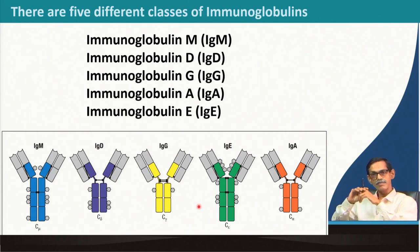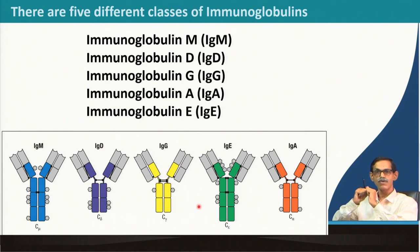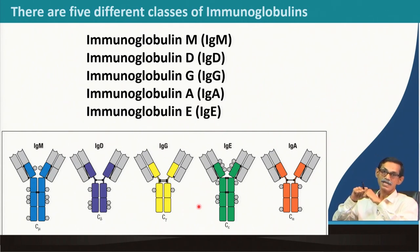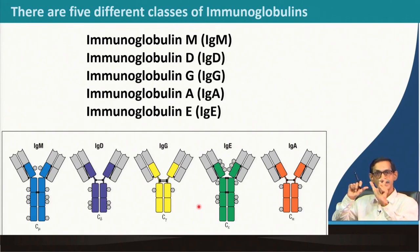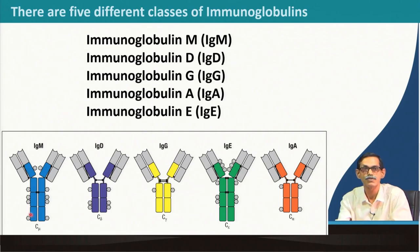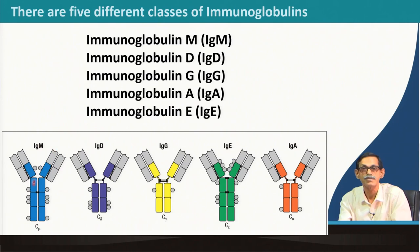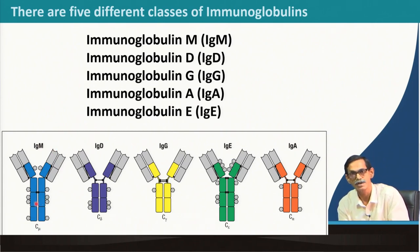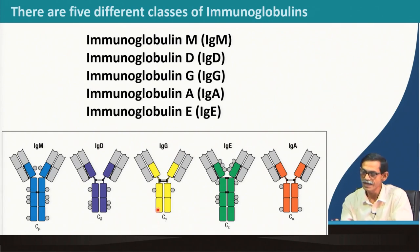Relating to primary and secondary immune responses: in the primary response the predominant antibody is IgM, while in the secondary response the predominant antibody is IgG. This is a key difference between primary and secondary immune responses, in addition to lag period and amount produced.